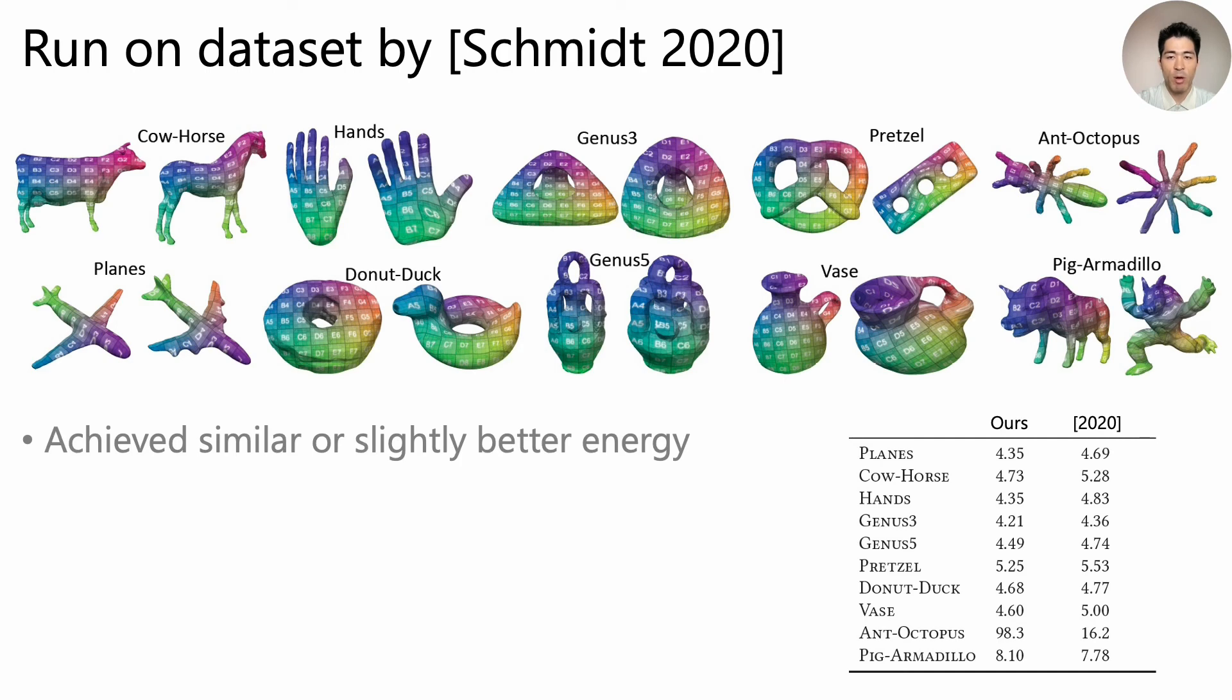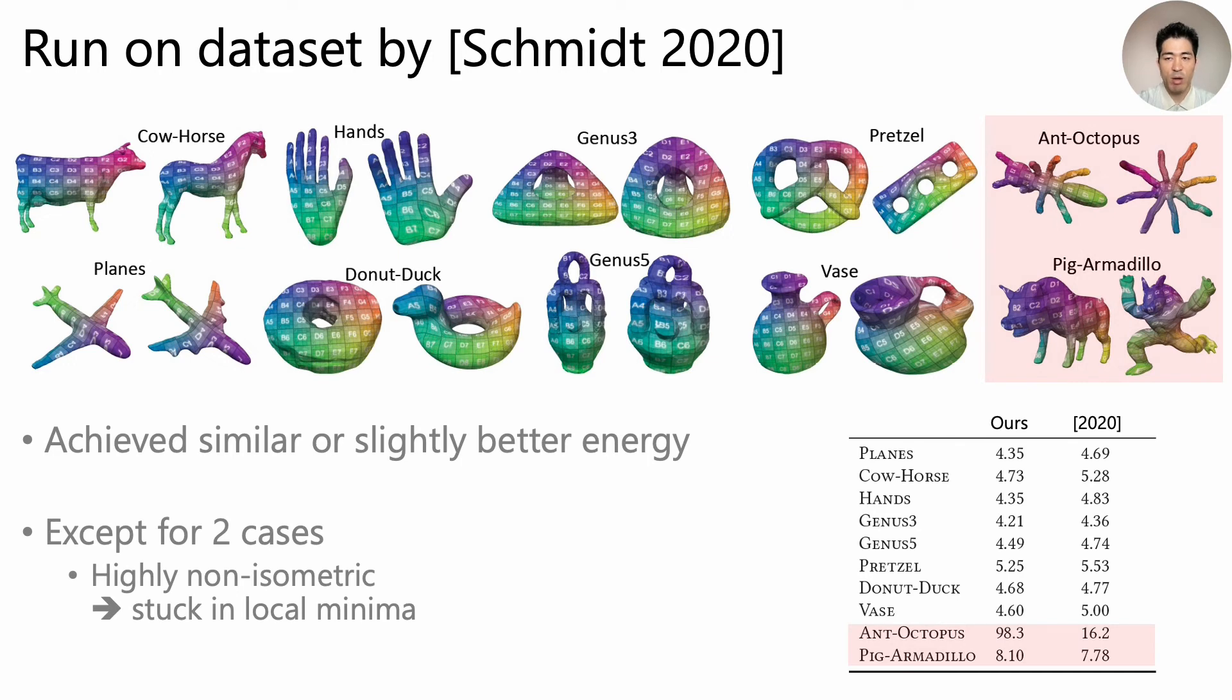Now comes the evaluation part. We ran our algorithm on the dataset released by the previous work. We achieved similar or slightly better energy for all but two cases. These two exceptional cases are highly non-isometric and our algorithm easily got stuck in local minimum.